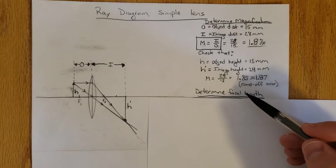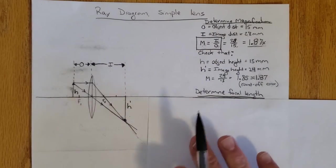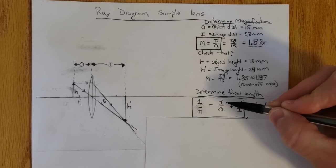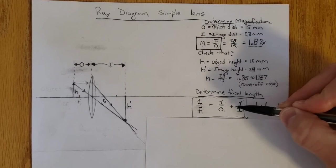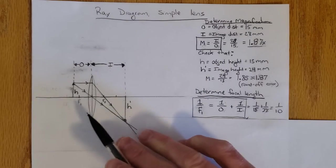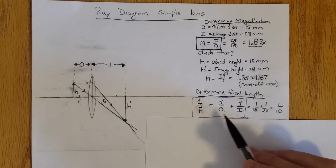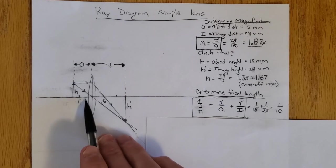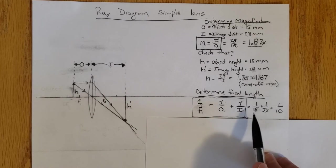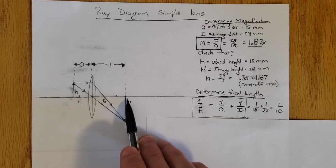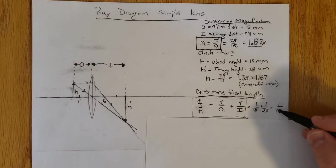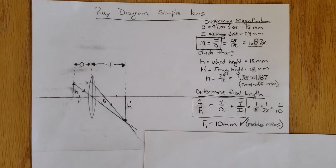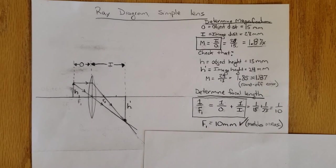The second lens formula is used to determine focal length. The standard form is 1 over the focal length equals 1 over the object distance plus 1 over the image distance. I already know that my focal length is 10 millimeters. Let's check this formula. 1 over the 15 millimeter object distance plus 1 over the 28 millimeter image distance does equal about 1 over 10. You'll have to use your own calculators to prove that.